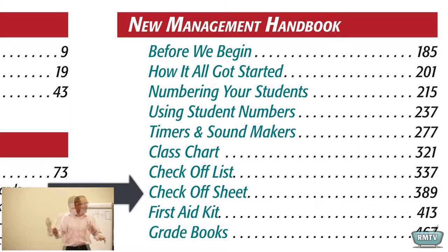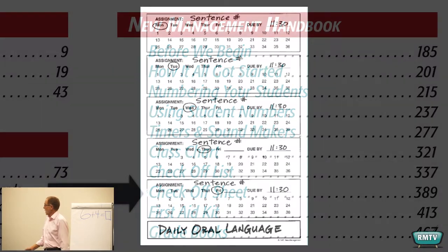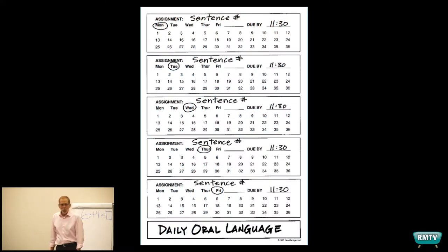This is nothing more than five checkoff lists turned sideways, crunched onto one piece of paper. This came into play because we were doing daily oral language back in the day, and I didn't want to put a list out every single day. That was annoying. I thought if I had a form that's good for the whole week, yay! So there's my form for dealing with daily oral language.